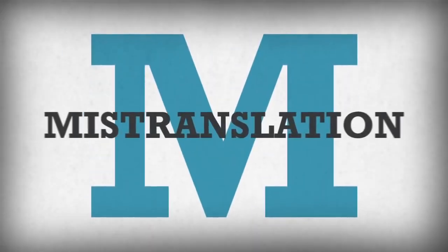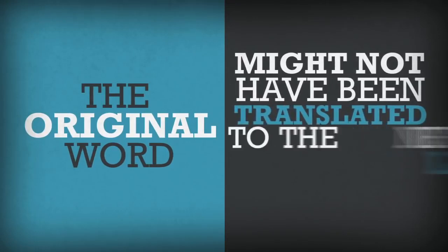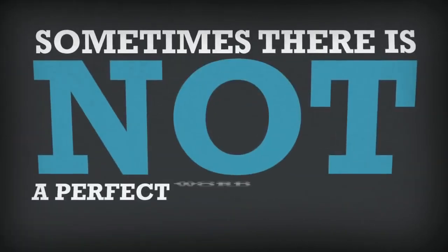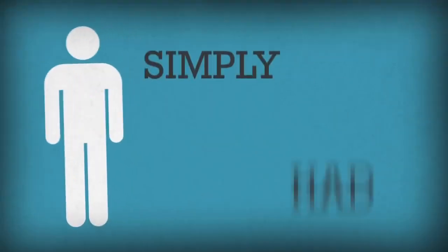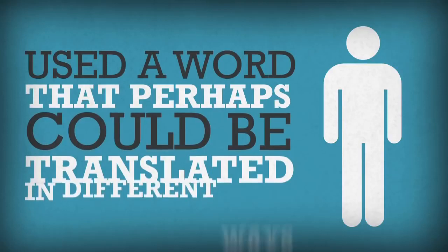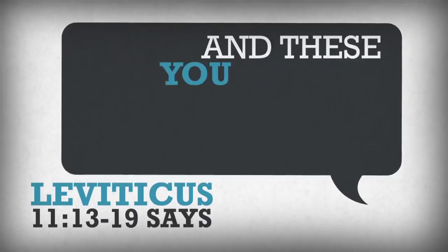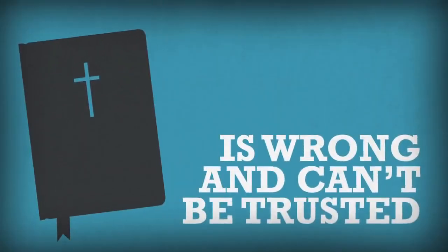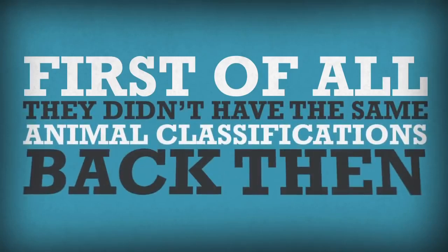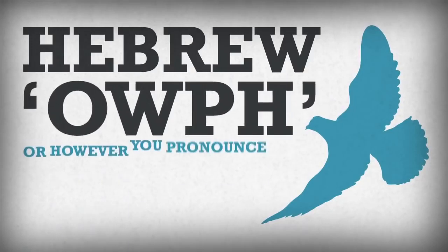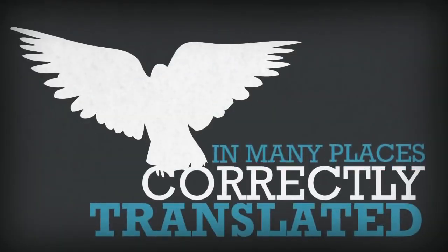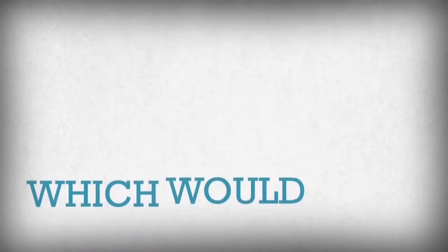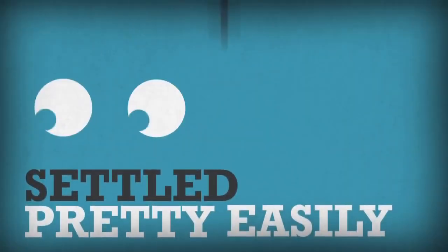M is for Mistranslation. This is when the original word might not have been translated to the new language perfectly. Sometimes there's not a perfect word equivalent at the time of translation, or the translator simply had a slip of the pen or used a word that could be translated in different ways. Context and comparison solves this lickety-split. For instance, Leviticus 11:13-19 says, 'And these you should regard as an abomination among birds: the eagle, the vulture, buzzard, and bat.' Folks go nuts on this one — 'Bats aren't birds!' They didn't have the same animal classifications back then, and the original Hebrew word translated 'bird' here is 'alf,' which, although correctly translated 'bird' in many places, also has a broader meaning like 'winged creature,' which would of course include bats. This is all settled pretty easily with a little looking and thinking.